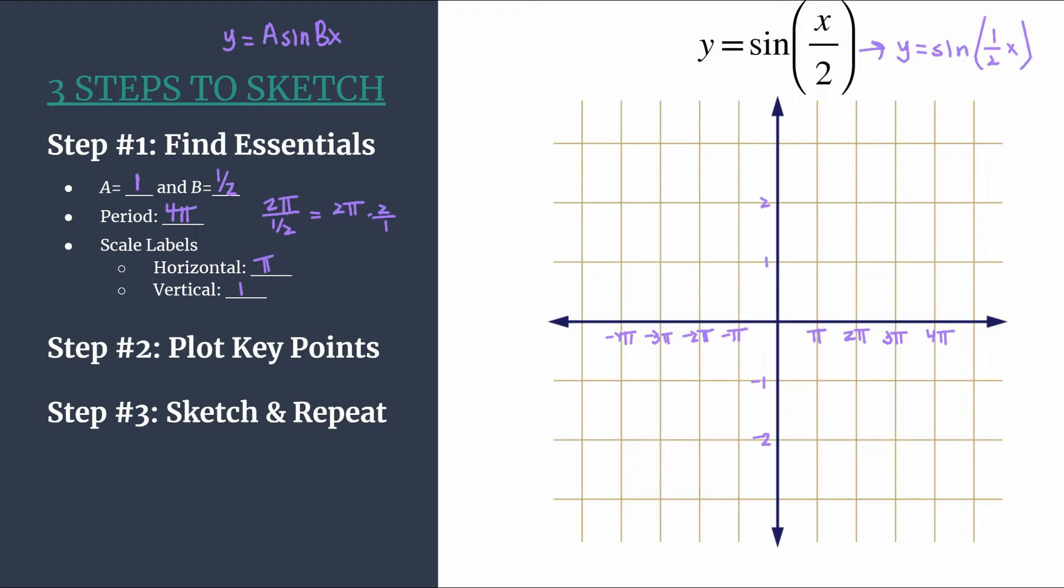Remember our pattern for an unshifted, unreflected sine graph is just 0, maximum, 0, minimum, then repeat. So here we know what we're working with. We have everything labeled. We just put our pattern on and everything falls into place.